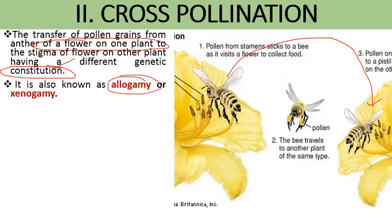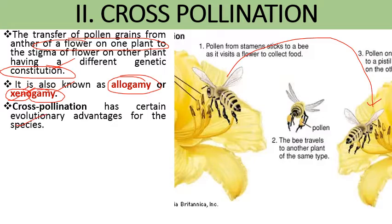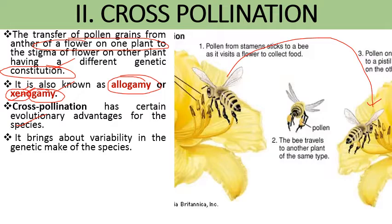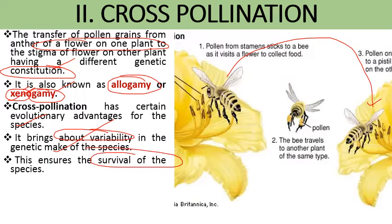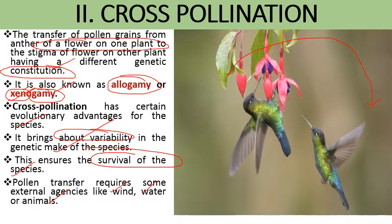This process is also known as allogamy or xenogamy — 'xeno' means alien and 'gamy' means marriage. Cross pollination has certain advantages: firstly it brings variability or variation, which is important for the survival of a species. It also makes the plant more resistant to various abiotic stresses, ensuring the survival of a plant species. Cross pollination requires external agencies like wind, water, and animals, which include both abiotic and biotic agencies for pollen transfer.